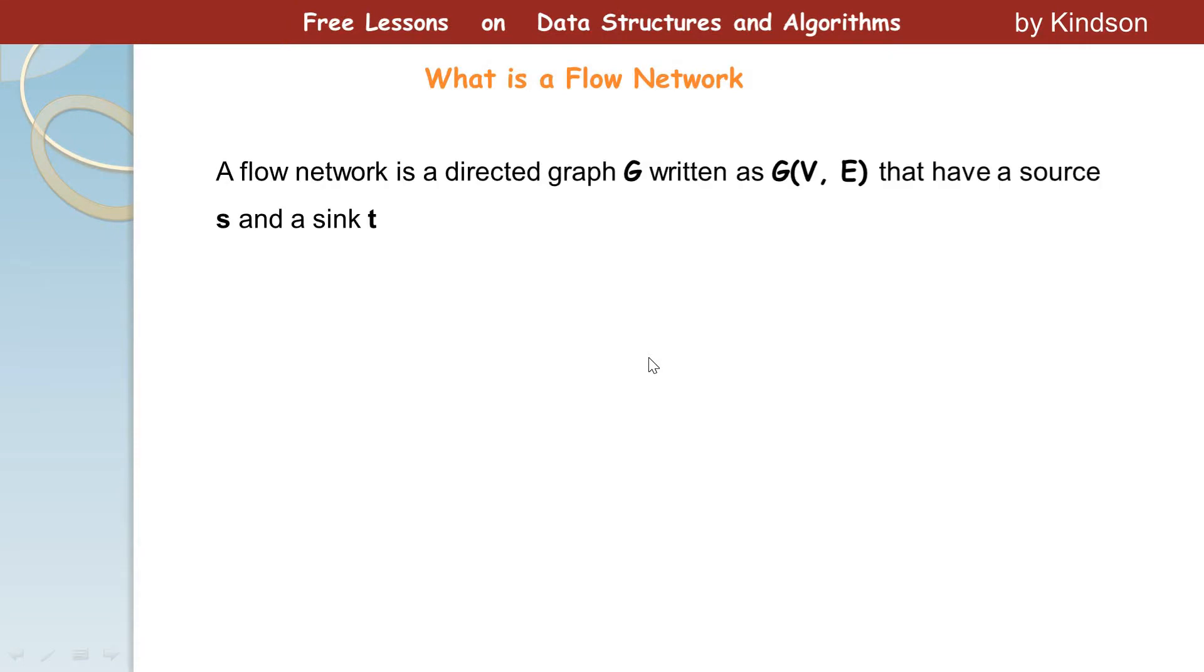A flow network is a directed graph written as G(V, E) that have a source and a sink. Right, so just know that this is modeled by a directed graph. A graph is of course a collection of nodes and edges or vertices and edges. V represents the list of nodes or vertices in the graph and E stands for the list of edges in the graph.